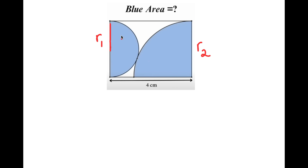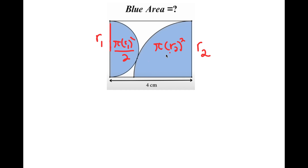The entire area of this blue region here is going to be pi times R sub 1 squared over 2, because the area of a circle is pi times R squared, and this is half of a circle, so it's pi times R squared over 2, and the radius in this case is R sub 1. This part is going to be pi times R sub 2 squared over 4, because this is one fourth of an actual circle.